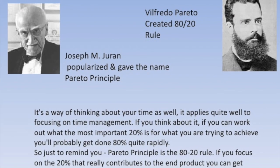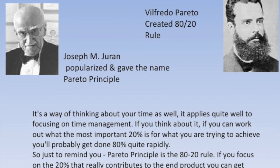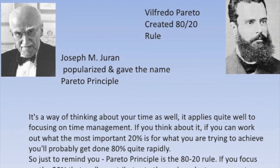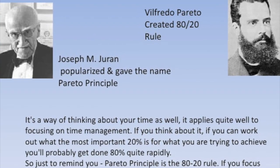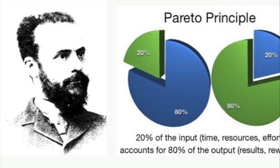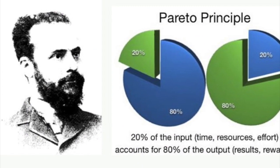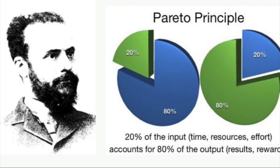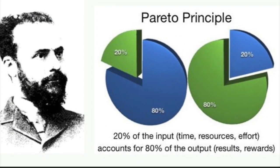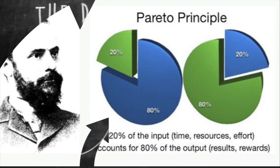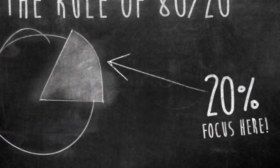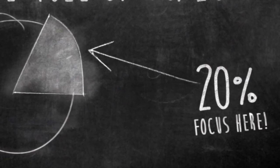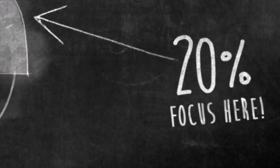Juran dubbed the principle Pareto's principle after the Italian economist Vilfredo Pareto, who observed that 80% of the land in Italy was owned by 20% of the population. While the Pareto principle has seen a few decades pass since its inception, the theory behind the principle is timeless.